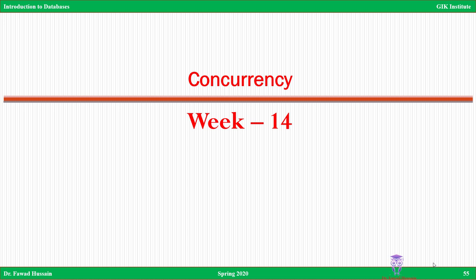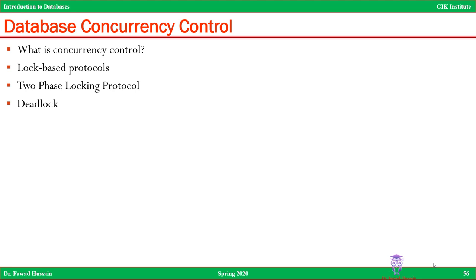For that we have what is called concurrency control. Concurrency control basically means that you have different transactions and you're trying to control how these transactions can be executed simultaneously. The outline of this lecture is: what is concurrency control, then lock-based protocols, then two-phase locking protocol, and finally deadlock. We'll cover as much as we can and carry any leftovers to the next lecture.